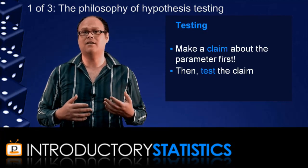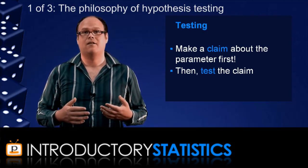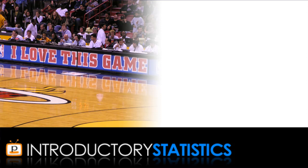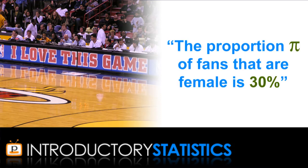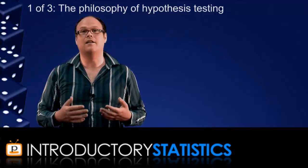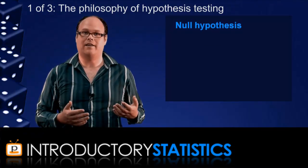For example, someone studying gender in sports might claim that, of all fans attending national basketball games, the proportion that are female is 30%. This becomes the hypothesis for the test, and is known as the null hypothesis, and is written like this.